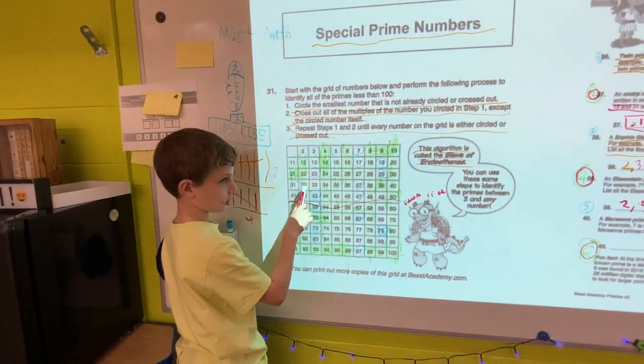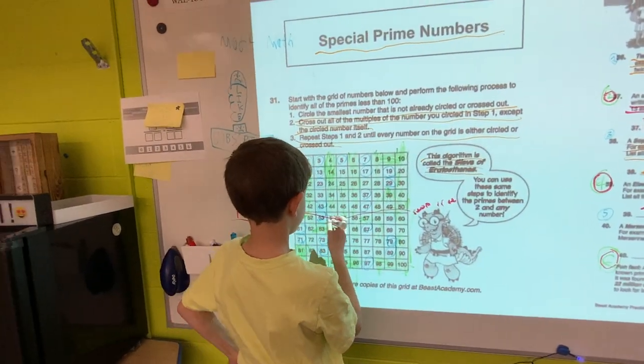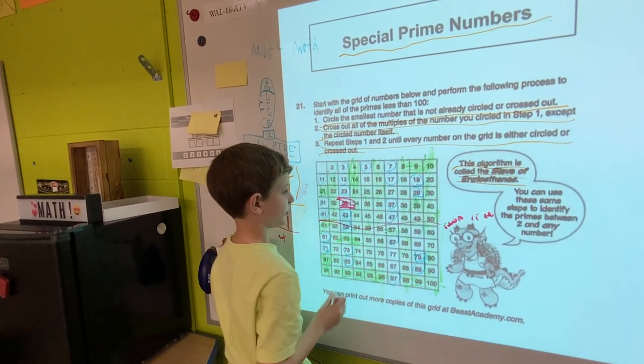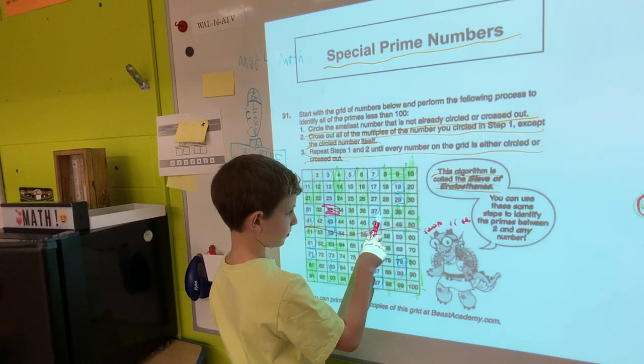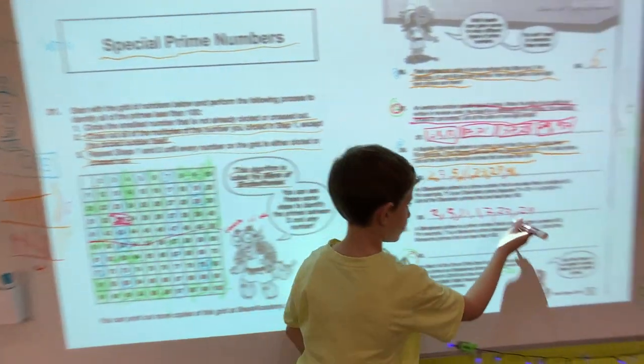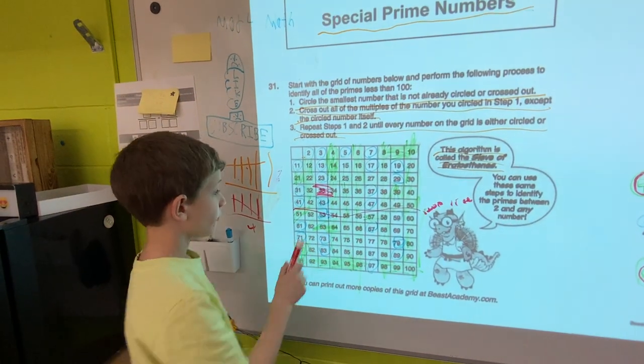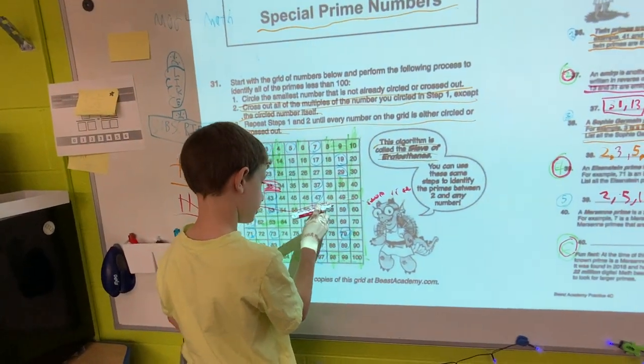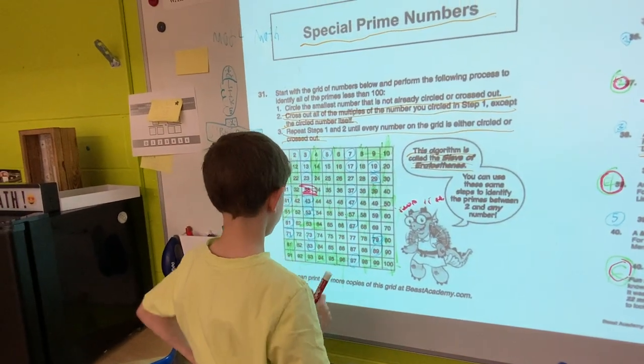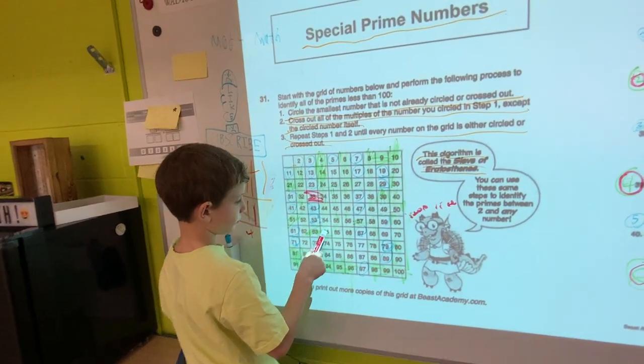31 plus 1 is 32, no. 37 plus 1, 38, no. 41 plus 1, 42, yes. 43, 44, yes. 47, 48, no. 53, 54, yes.